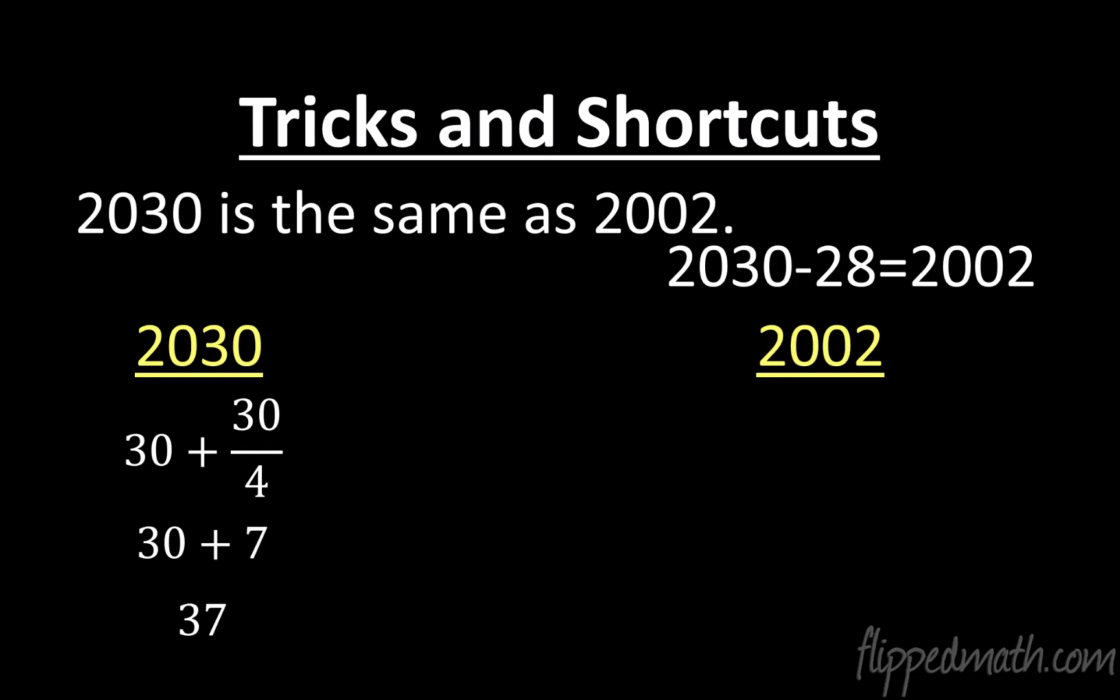2030 minus 28 gives you 2002. So 2002 and 2030 have the same calendar system. So let's see with 02. 02 plus 02 over 4. Well, that's just 2 plus 0. So you just get a 2. Those two numbers, how are they possibly the same? Because remember, you're dividing by 7 and then looking at the remainder. So dividing by 7 here goes into 35 with a remainder of 2. So yes, the remainder of 2 here is going to be the same as this number 2 there. All right. So it works the same.